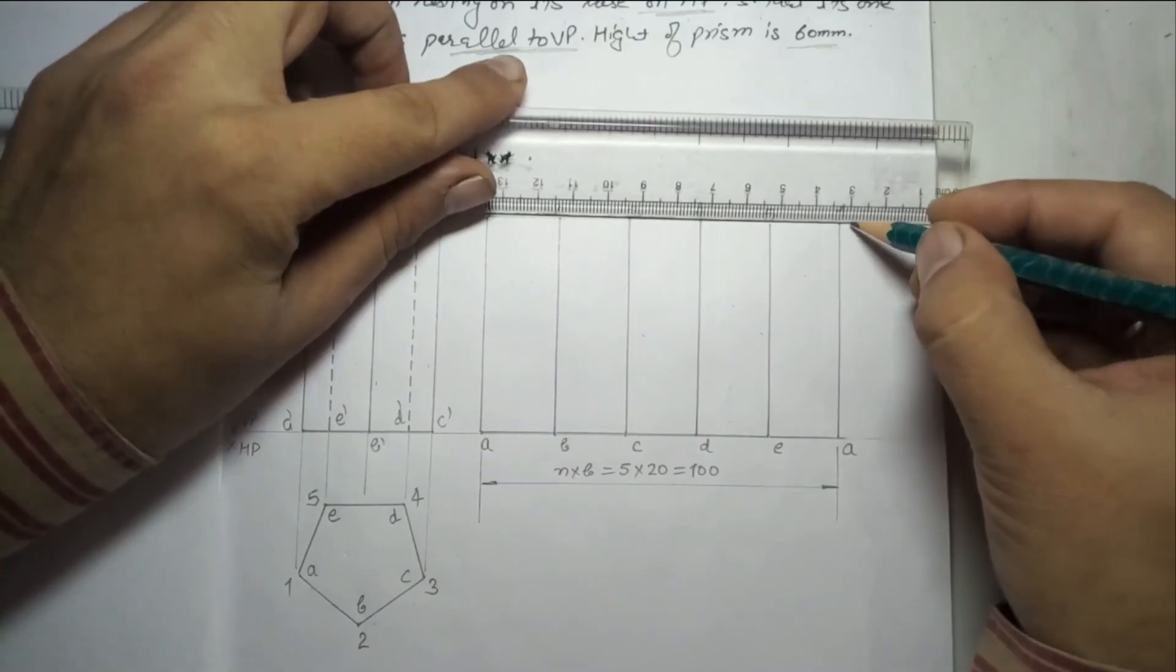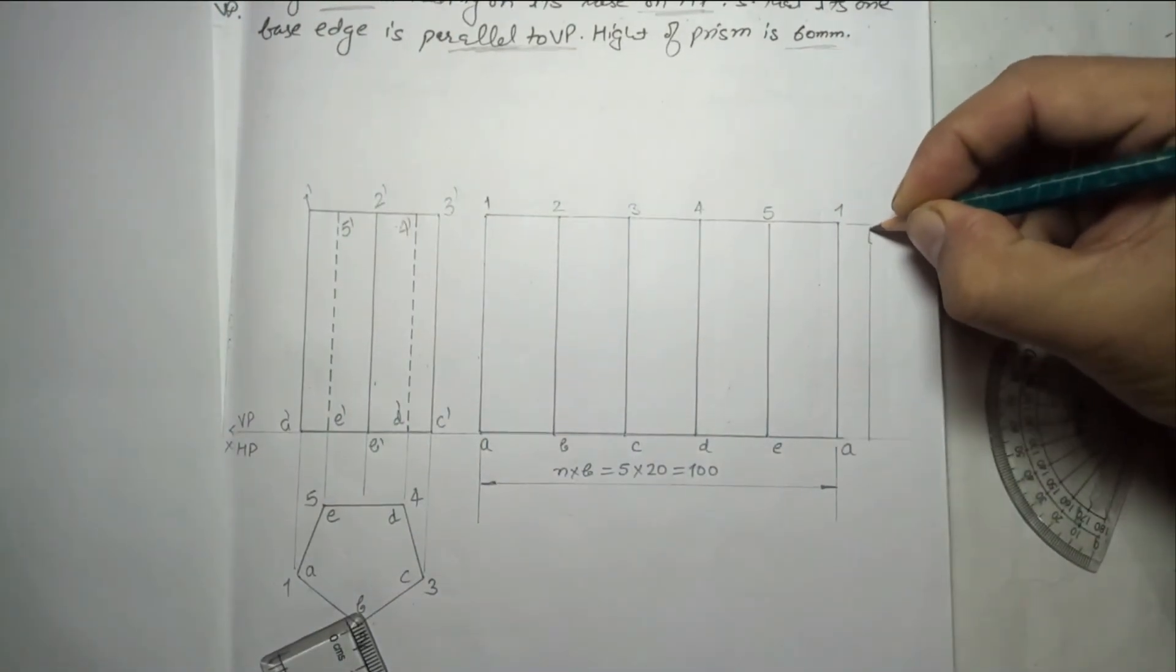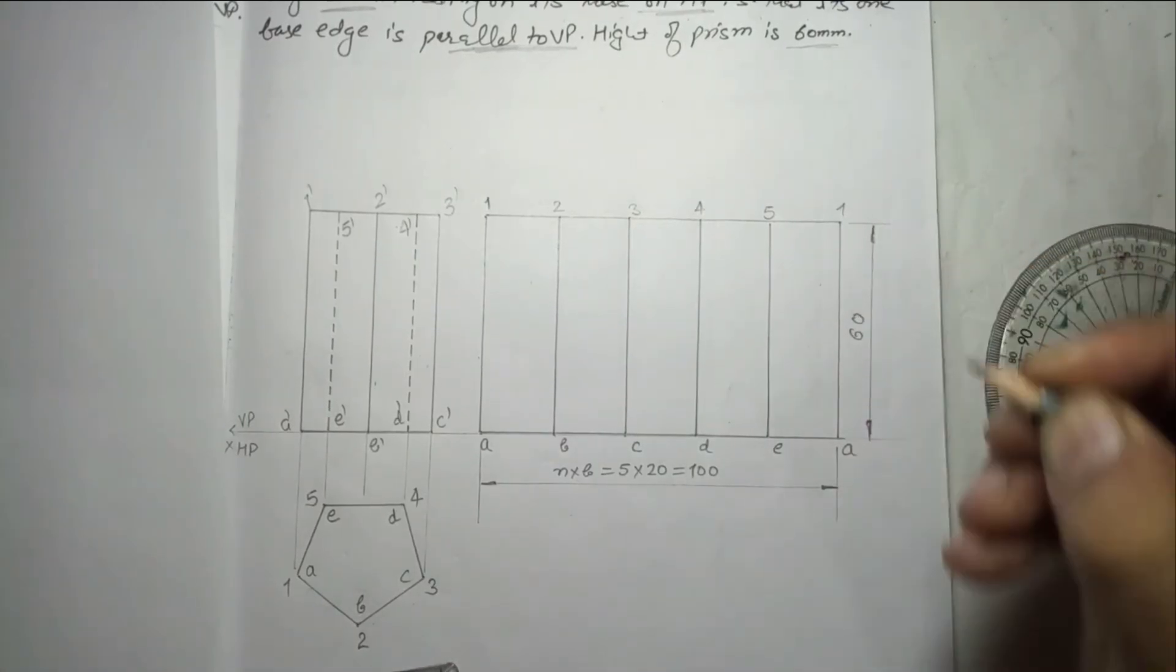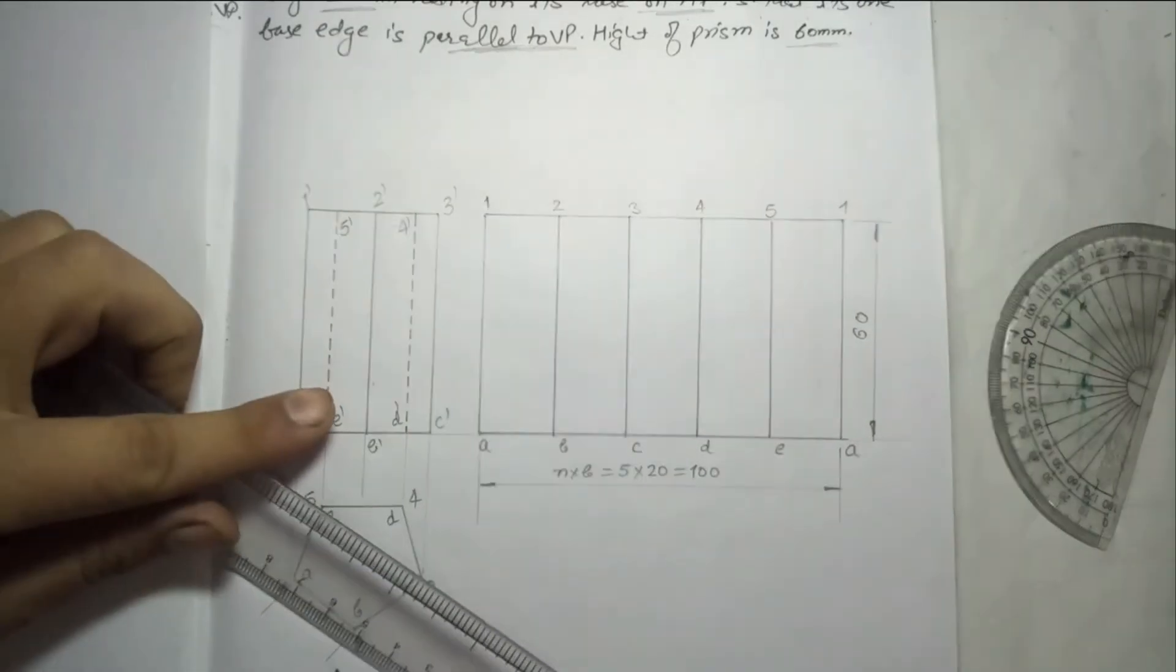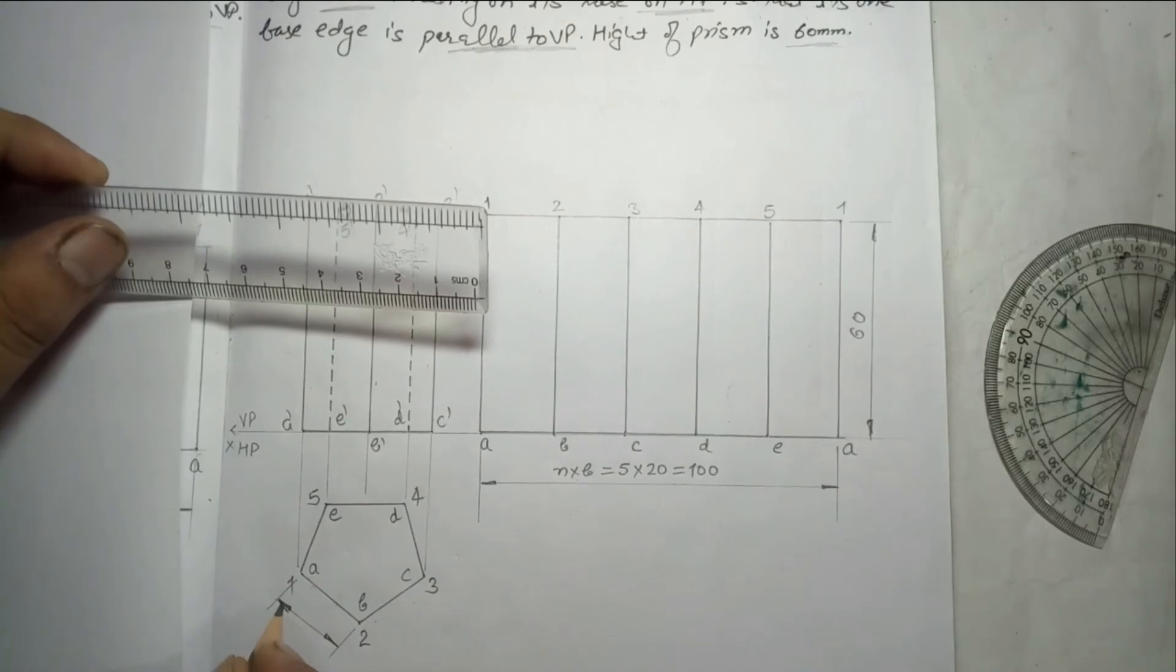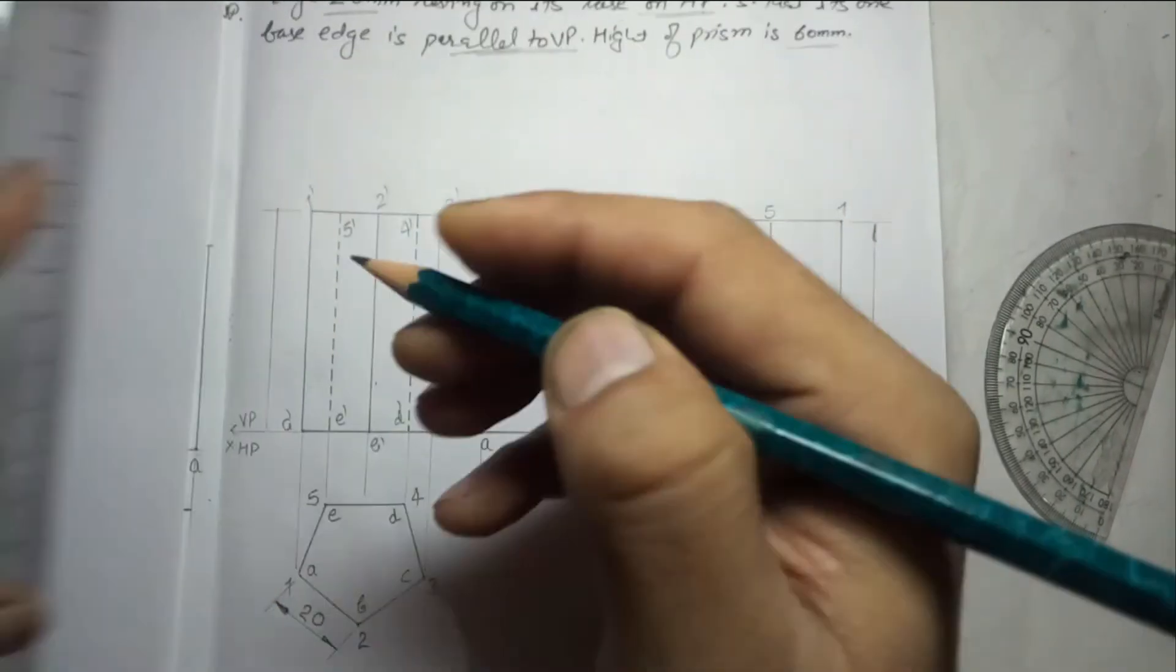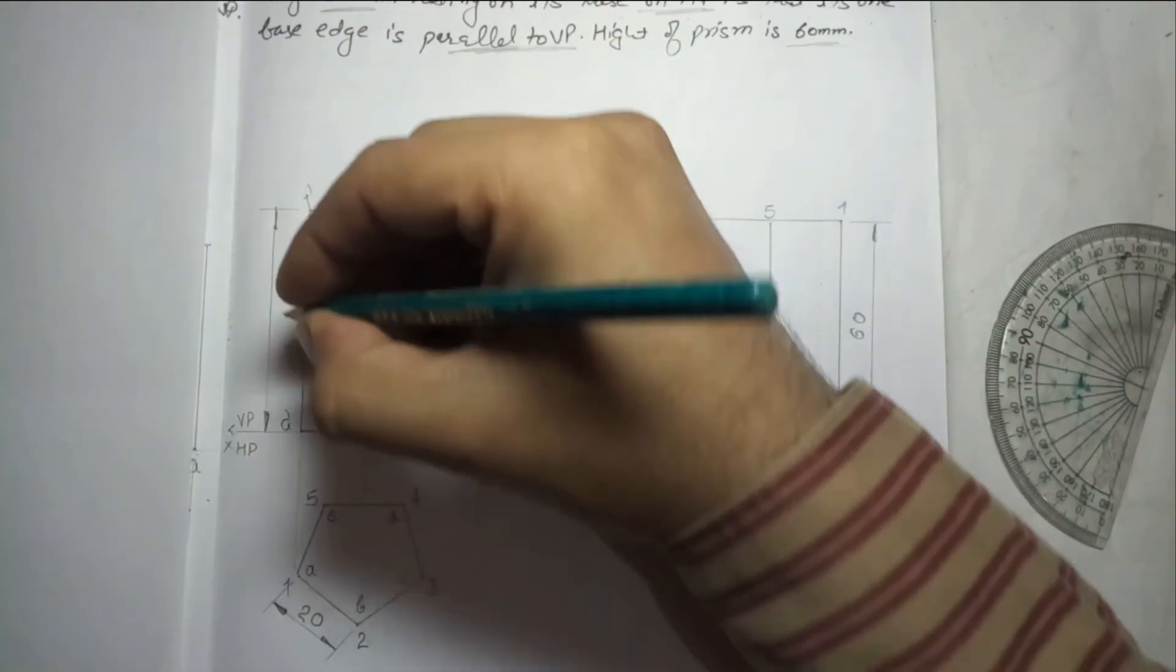Same here, you have to give the height. So this is the height 60mm. One base edge is required to give the dimension in top view, no need to give the dimension of all the base edges. So one base is 20mm. And here you should keep the height of front view separate, so this is 60mm.